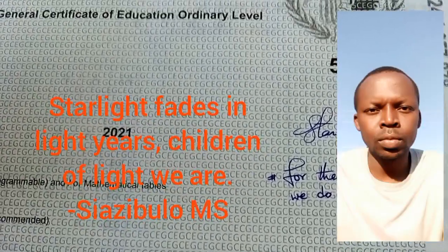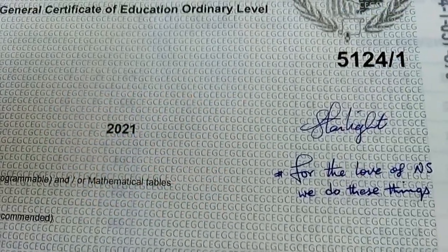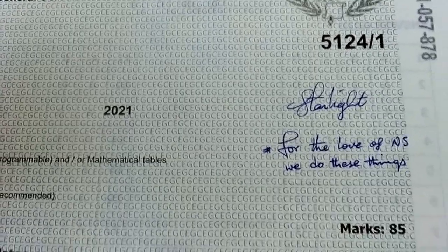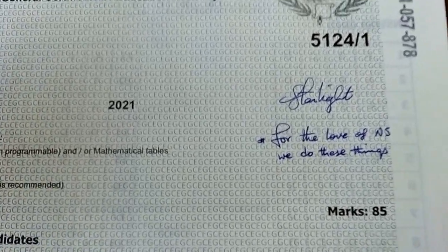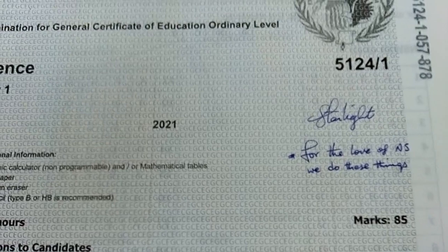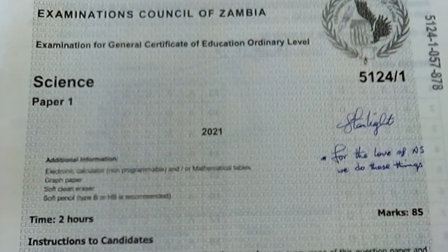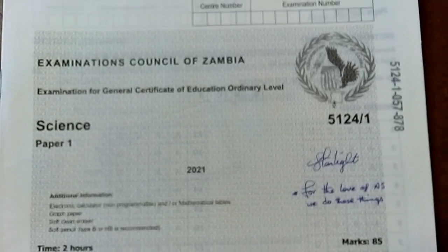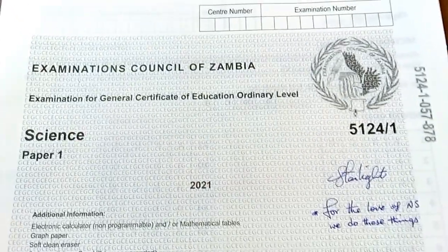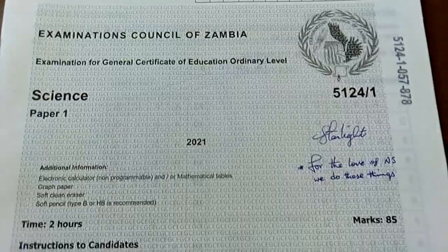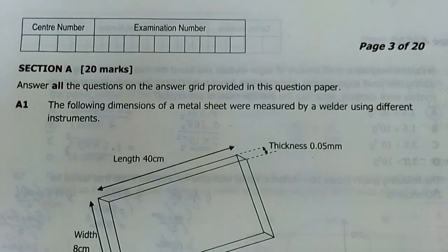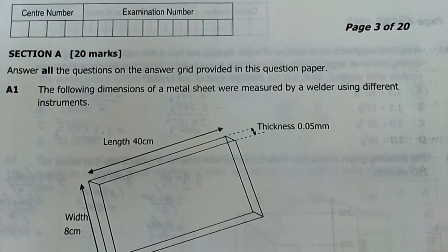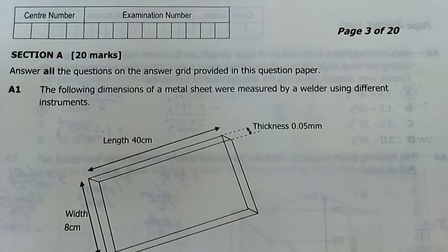For the love of science we do these things. Everywhere I look I just see natural science. This paper is 2021 science paper one physics GCE and I'm trying to go through solutions to it. We'll go to question one. I'll do section A as usual in three parts.